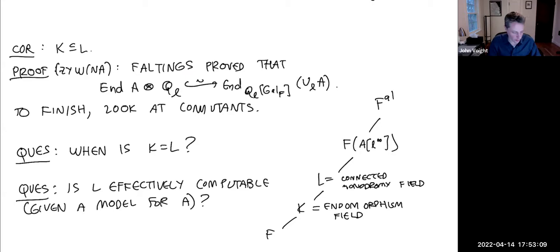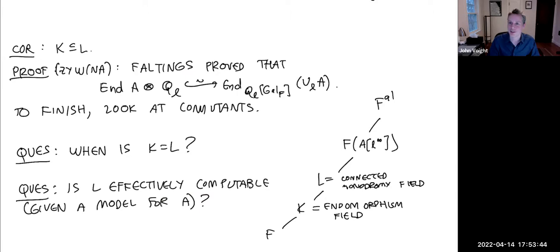We do know the endomorphism field K is effectively computable — that's in work of Davide Lombardo, and we have practical versions of it: there's Magma code that, given an abelian variety as the Jacobian of a curve, will output the endomorphism ring, algebra, and field of definition. So K is effectively computable; I wonder about L.